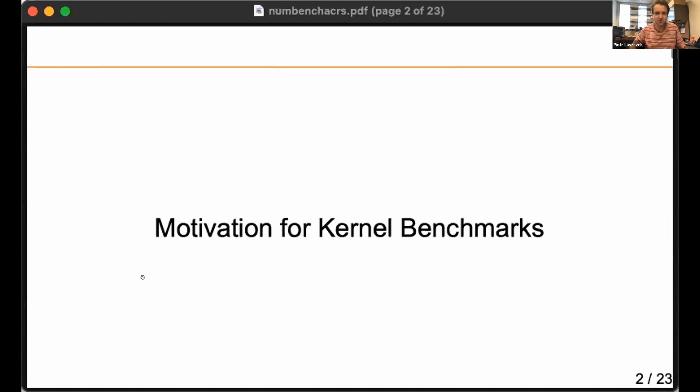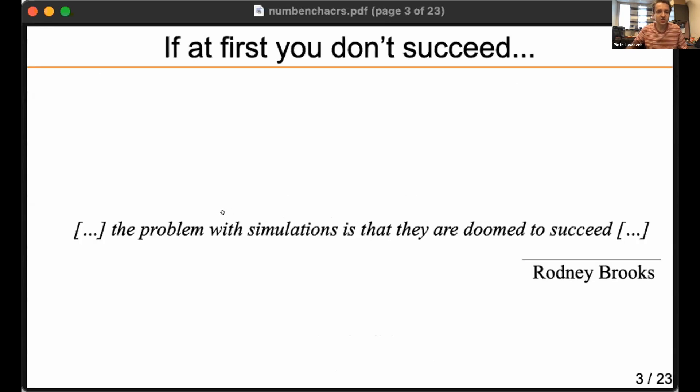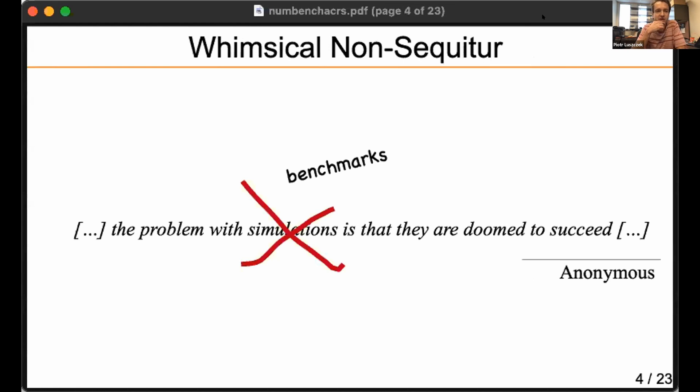So let's start with motivating the kernel benchmarks. These are benchmarks that involve small pieces of code possibly taken out of applications. There is this famous quote by Rodney Brooks that the problem of simulations is that they are doomed to succeed. I allow myself to take a whimsical non-sequitur and say that the problem of benchmarks is that they are doomed to succeed. Once you make a benchmark that measures something you want, you will eventually make it succeed.